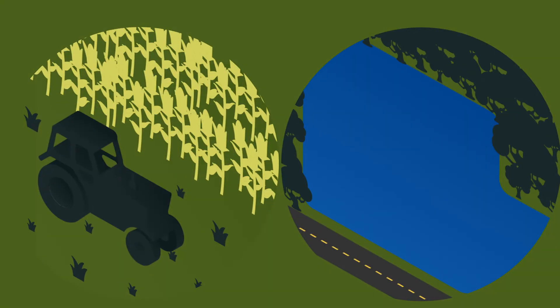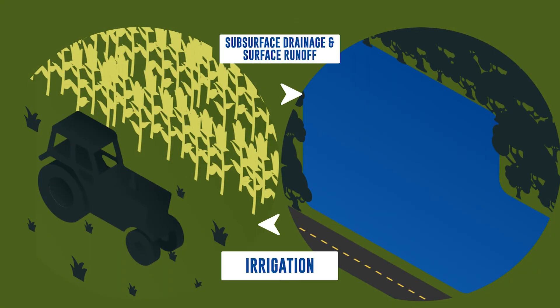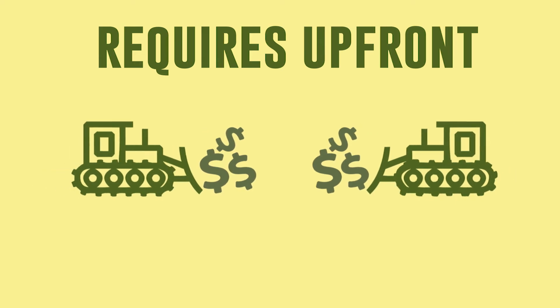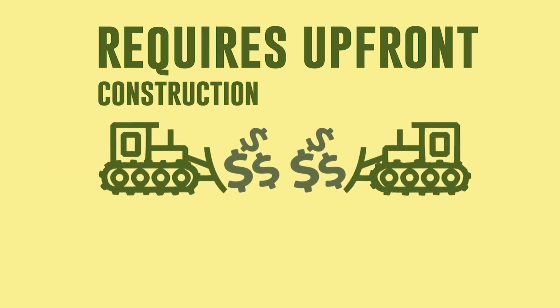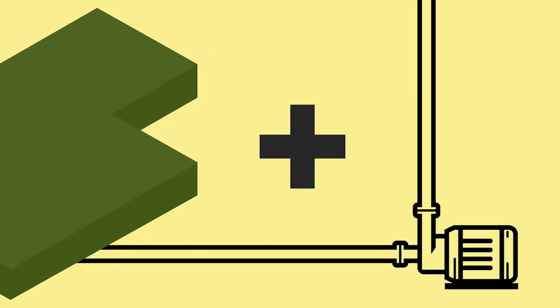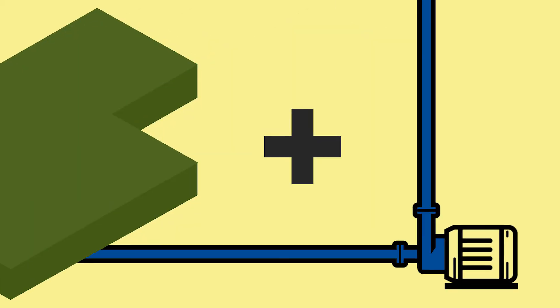Drainage water recycling is simply the practice of storing tile drainage flow in a pond or reservoir and then returning it to the crop through irrigation during dry periods. Drainage water recycling requires an upfront construction and infrastructure investment. The constructed pond or reservoir takes some land out of production and may require pumping facilities to move the water to the reservoir and or back to the crop.